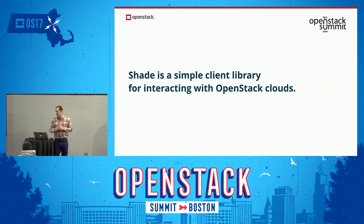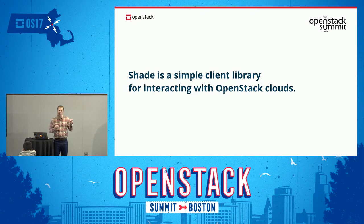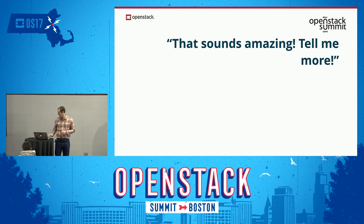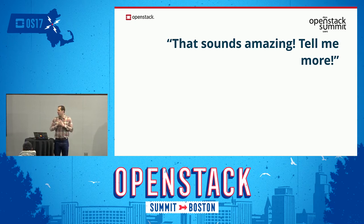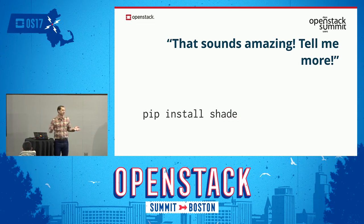Shade is a simple client library for interacting with OpenStack Clouds — notice the plural on clouds. Shade is also designed to interact not just with one cloud but many clouds, allowing you to have a multi-cloud infrastructure, whether that be a mixture of public clouds and private clouds, or a number of private clouds internally. To start using Shade, you have to install it into your development environment. Shade is a Python library, so it's a simple pip install shade. You can install it into a virtual environment — it's publicly available and immediately available for your programming environment.